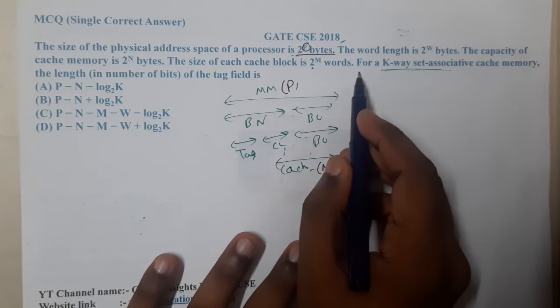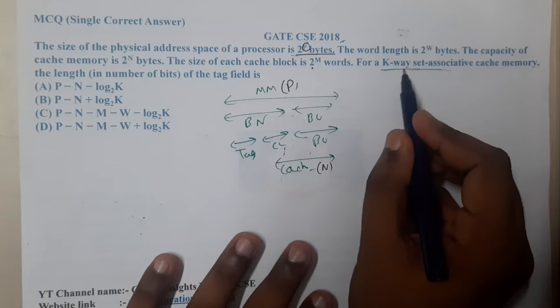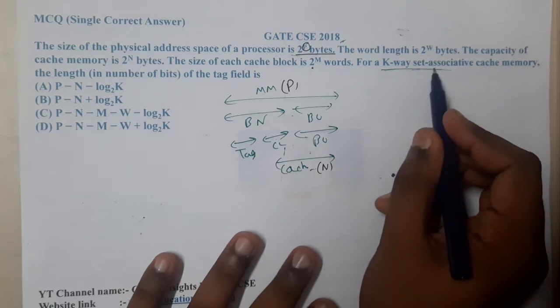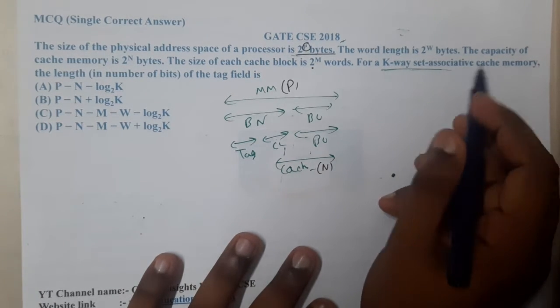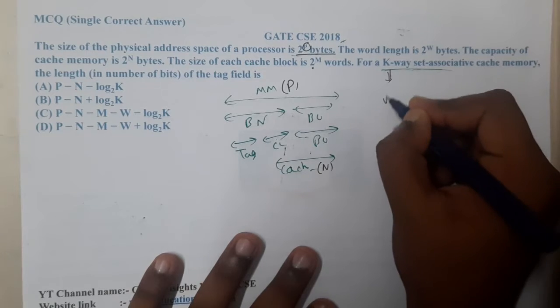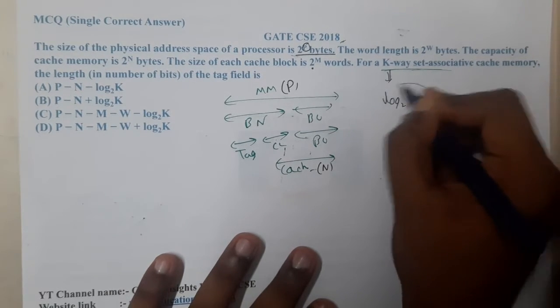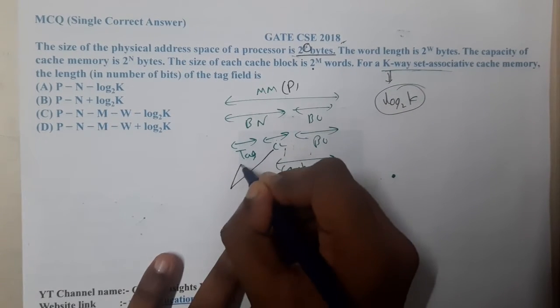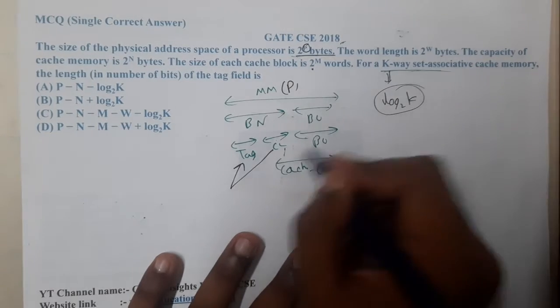They are saying it is a K-way set associative cache, so indirectly we should convert it into log base 2 of K, and those things will be added to the tag. They are asking what is the length of the tag.